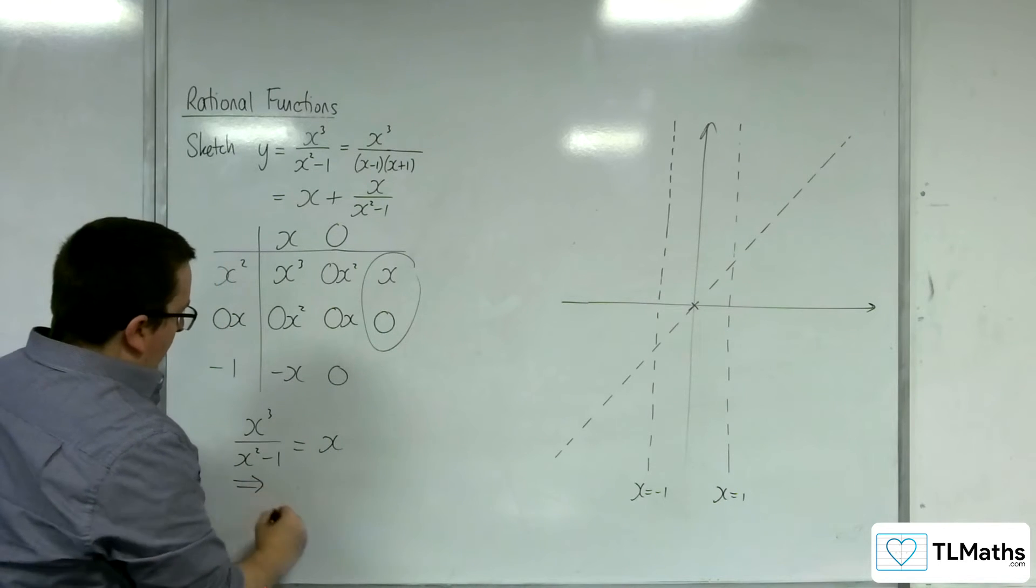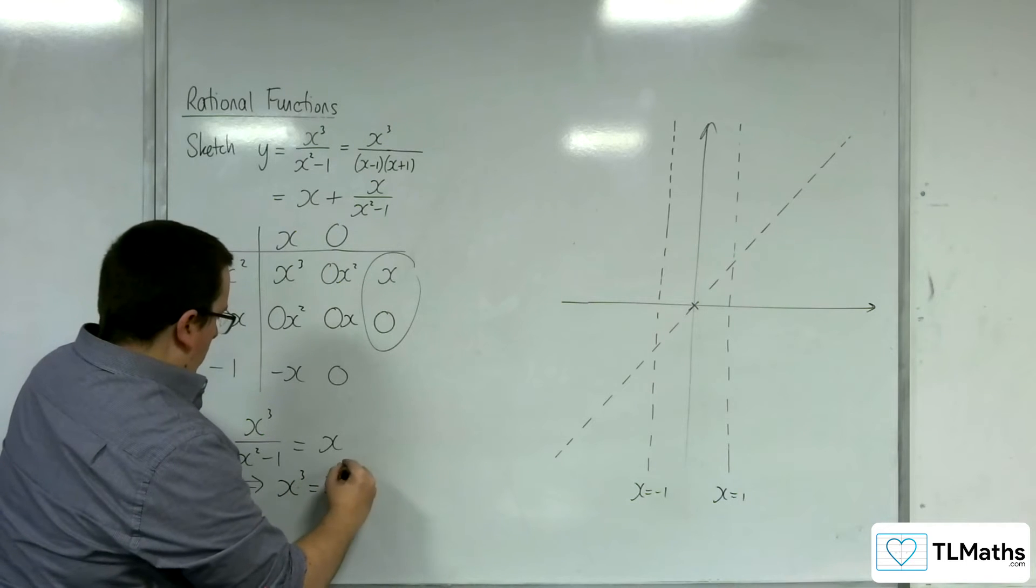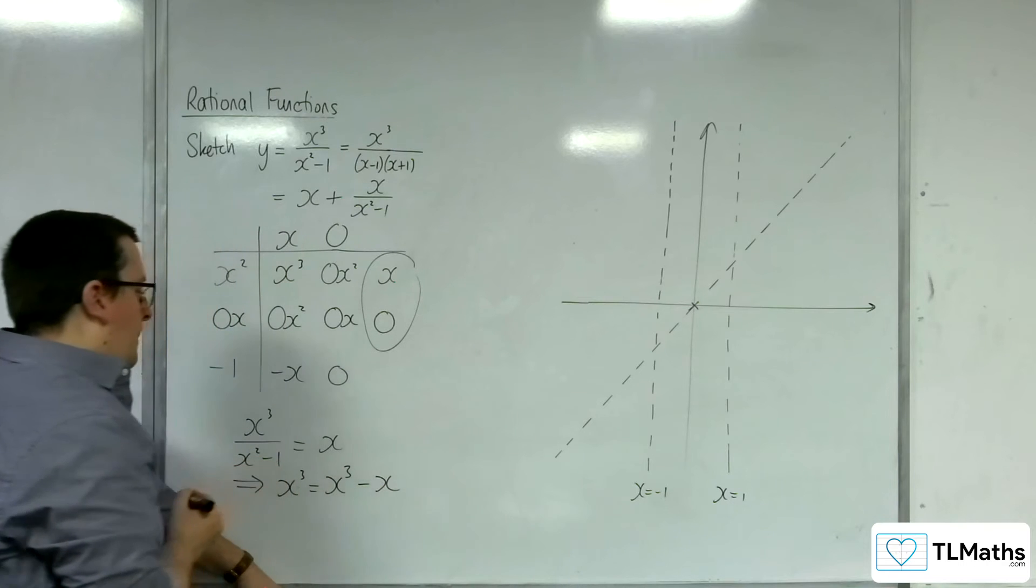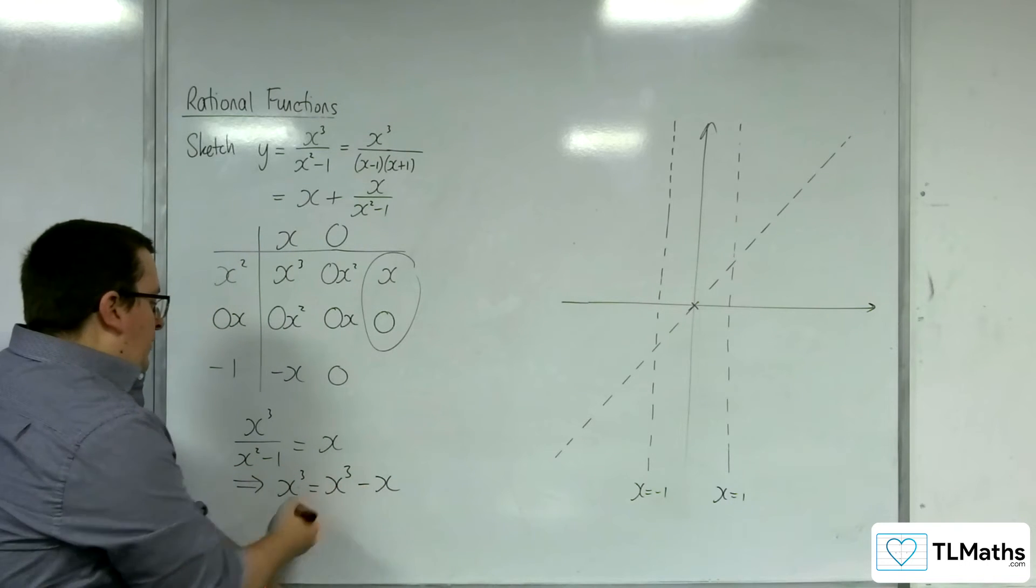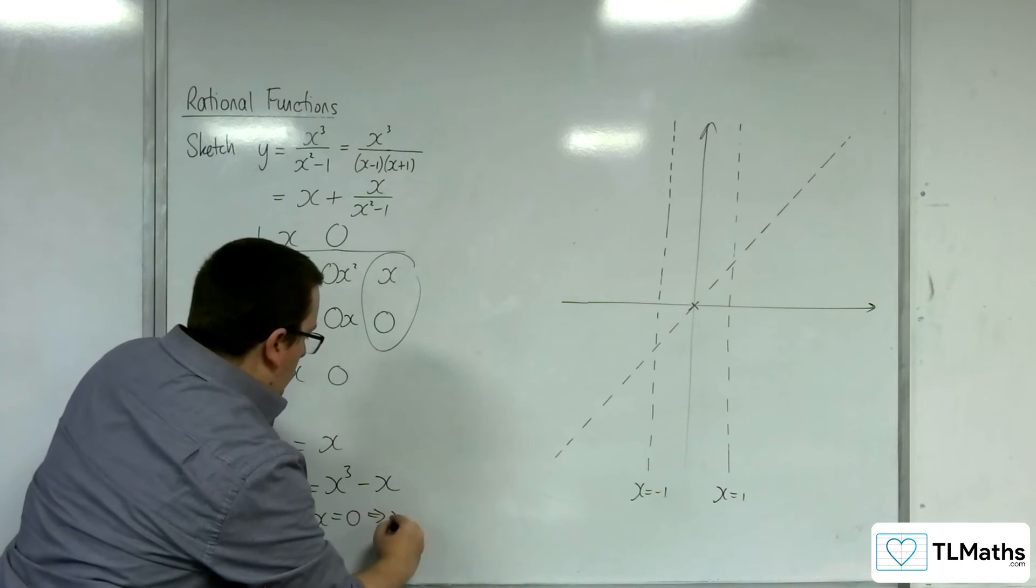Multiplying by x² - 1, we get x³ = x³ - x. The x³'s cancel, so I get -x = 0, so of course x = 0.